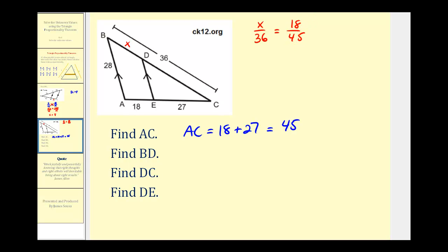And now we'll cross-multiply. So we'll have X times 45, that's 45X, must equal 36 times 18, which is 648. Now we'll divide both sides by 45. And I went ahead and used a calculator, that's going to be 14.4 units. So the length of BD is 14.4.